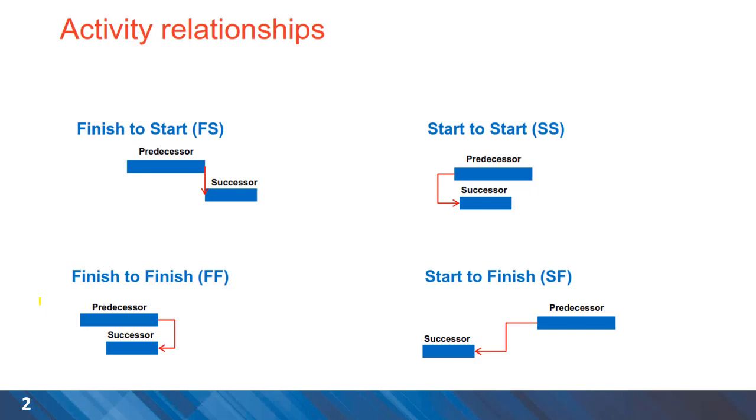Just a quick review of the four main types of activity relationships: finish-to-start, start-to-start, finish-to-finish, and start-to-finish.